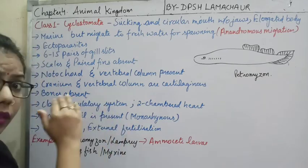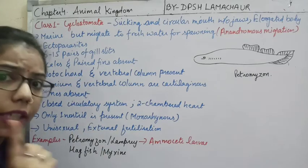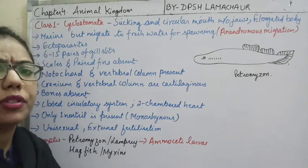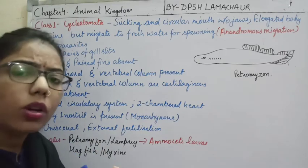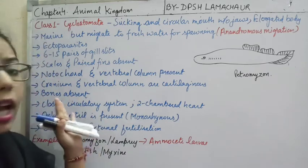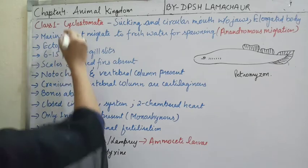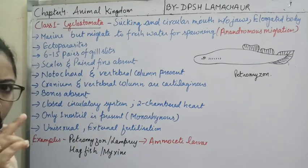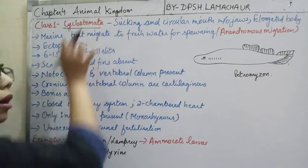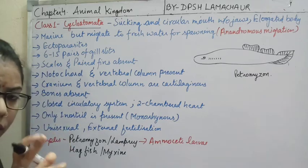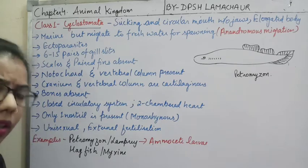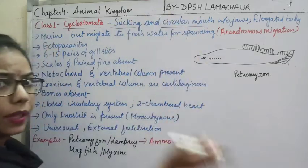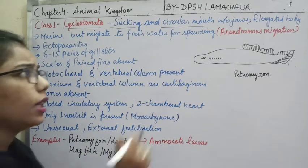Under Agnatha we have different classes. Before Class Cyclostomata there was Ostrachodermi, but that is now extinct, so we will not study it. We start with Class Cyclostomata. 'Cyclo' means round and 'stomata' means pore-like structure — these animals have a circular, sucking mouth without jaws, as they come under Agnatha.